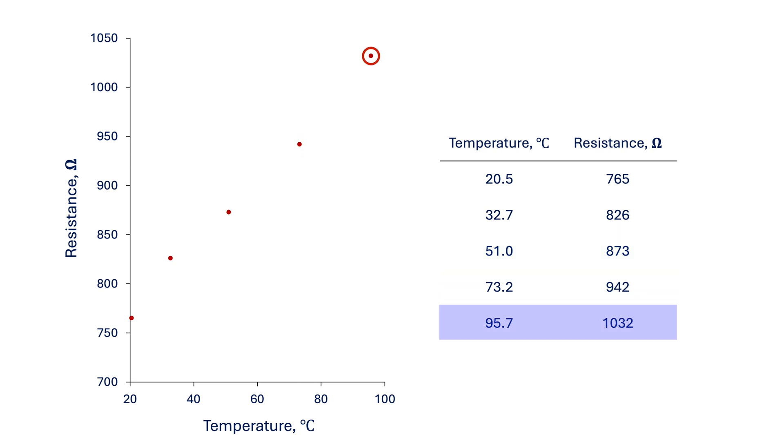Since it's known that the resistance is linearly proportional to temperature, we can draw a straight line that represents that relationship.